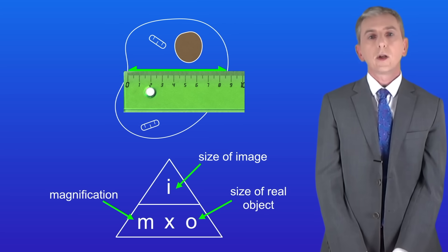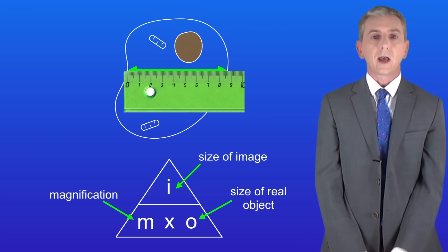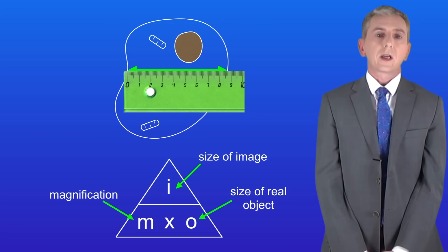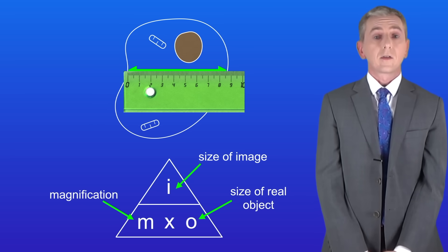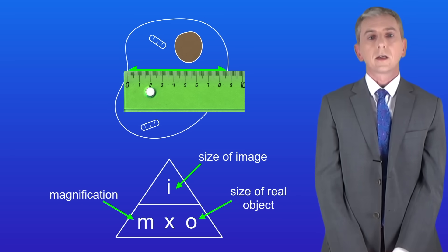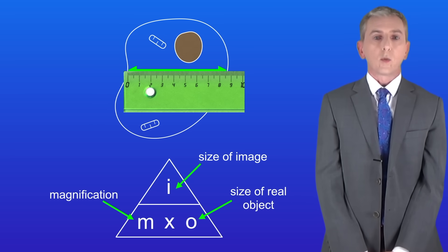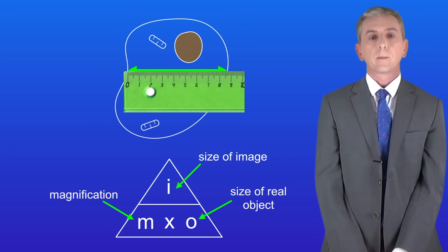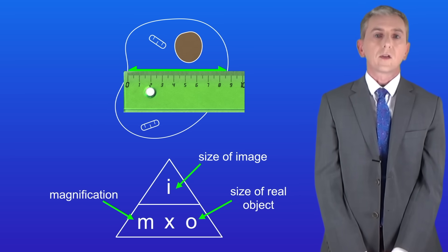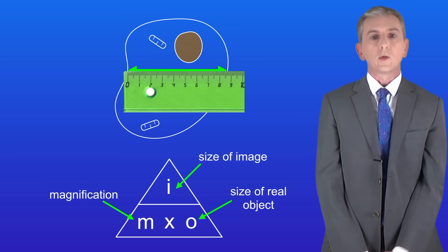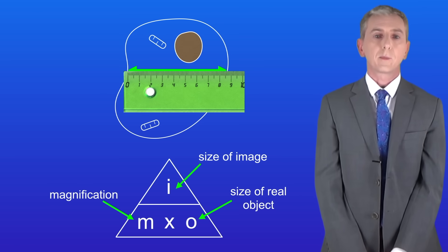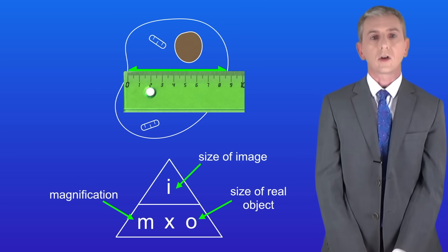Now if we know the image size and the magnification, then we can calculate the size of the real object. To do that we need to use the triangle that we saw earlier. The size of the real object is the size of the image divided by the magnification.